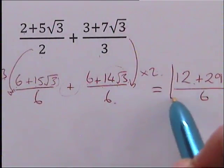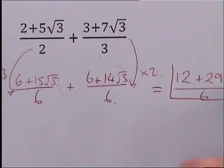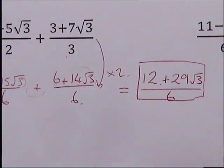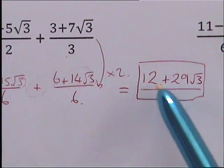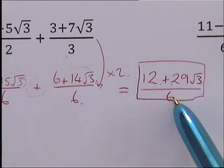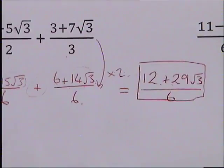And that is the answer you should have got — 12 plus 29 root 3, all over 6.